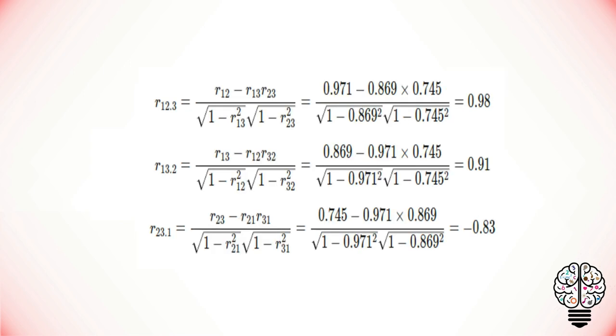Now we can calculate all the possible partial correlations. If we substitute those values, we will get r12.3 equal to 0.98, r13.2 equal to 0.91, and r23.1 equal to minus 0.83.